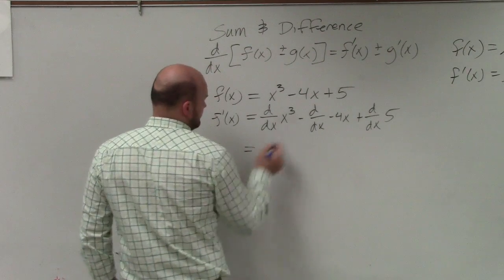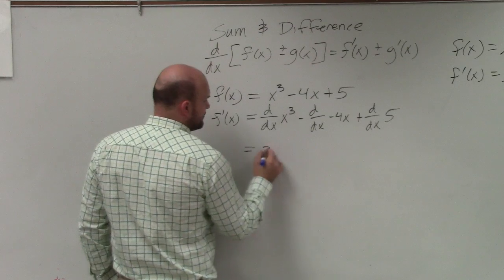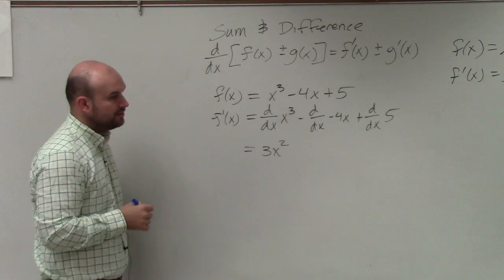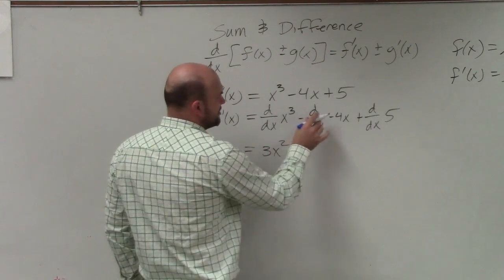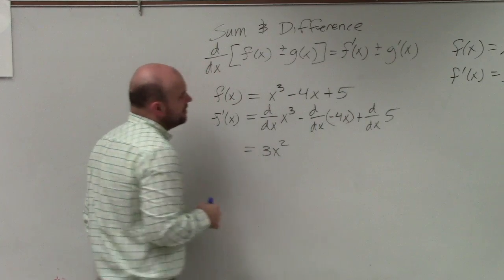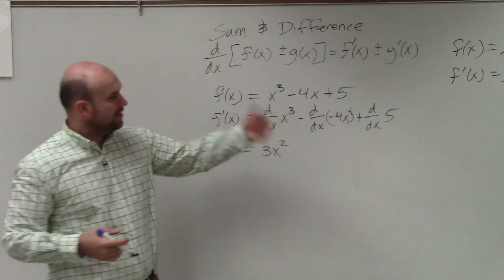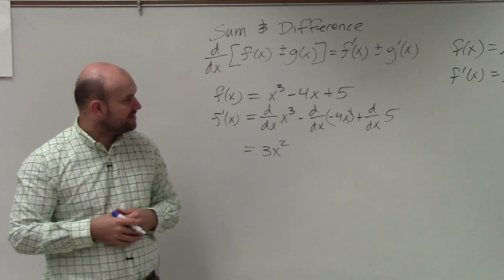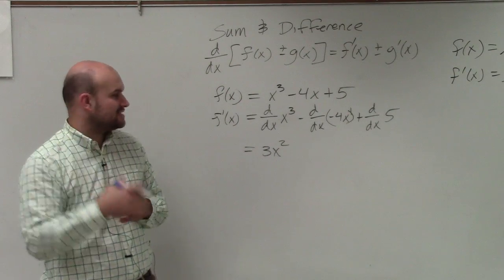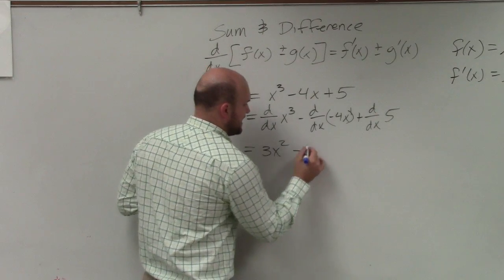So therefore, the derivative of x³ is going to be 3x² using the power rule. For the derivative of -4x, if you think of that as -4x¹, then 1 times -4 is -4. So that's just -4.